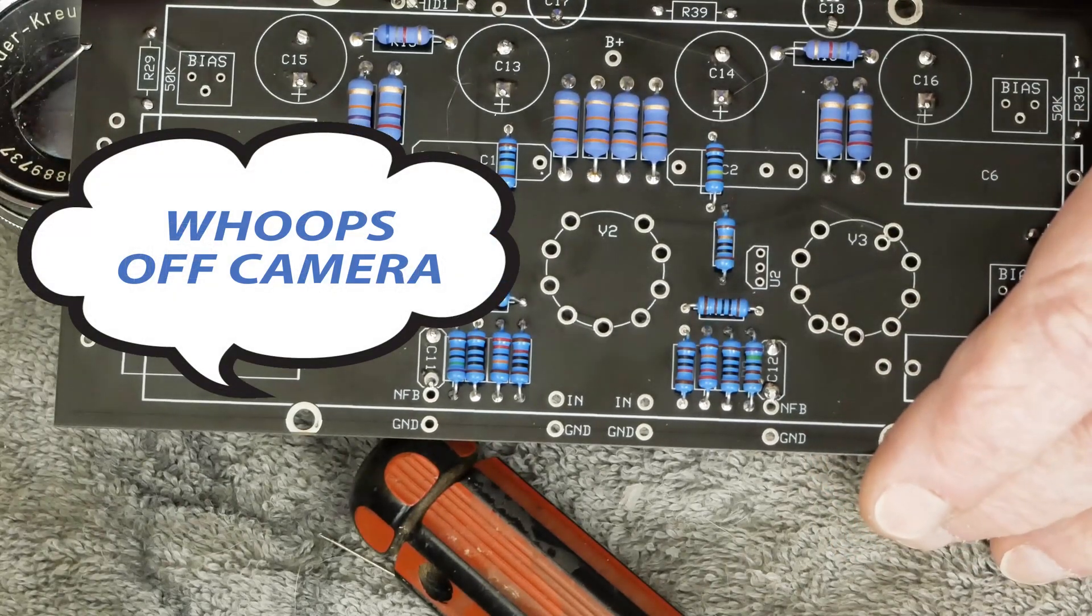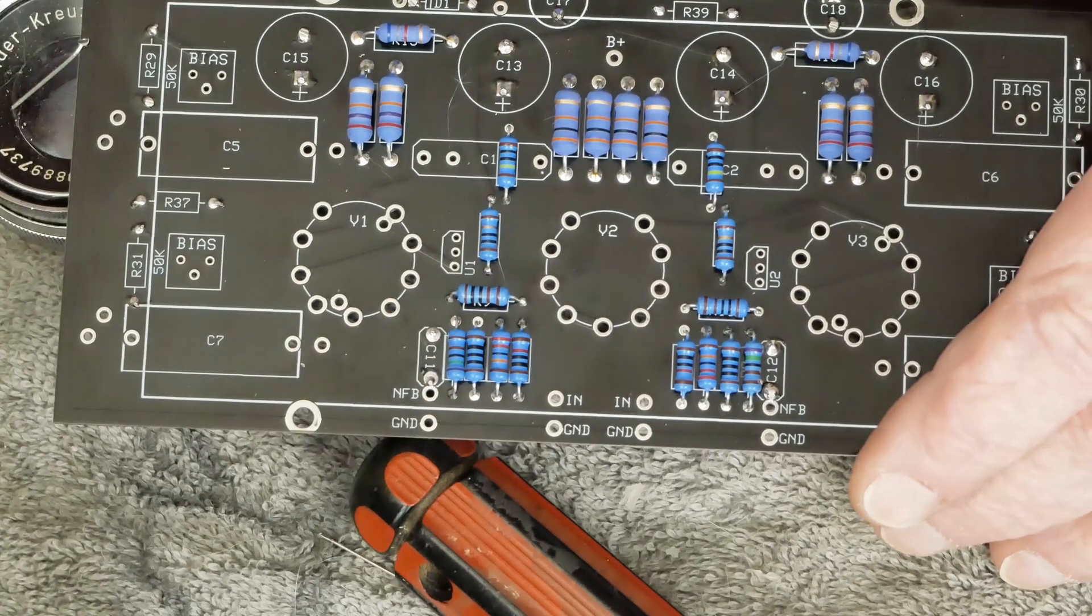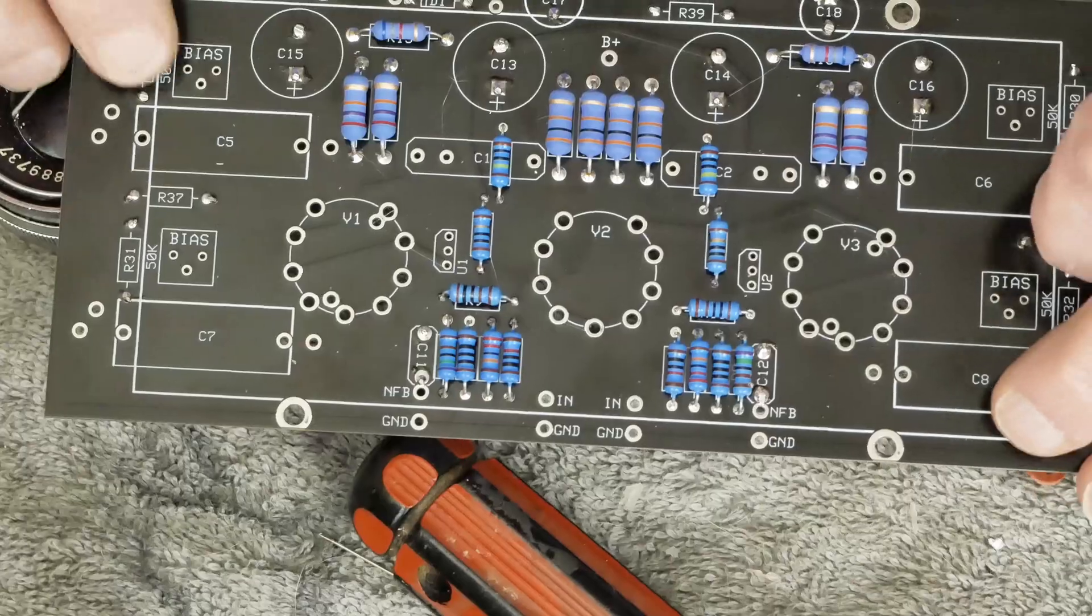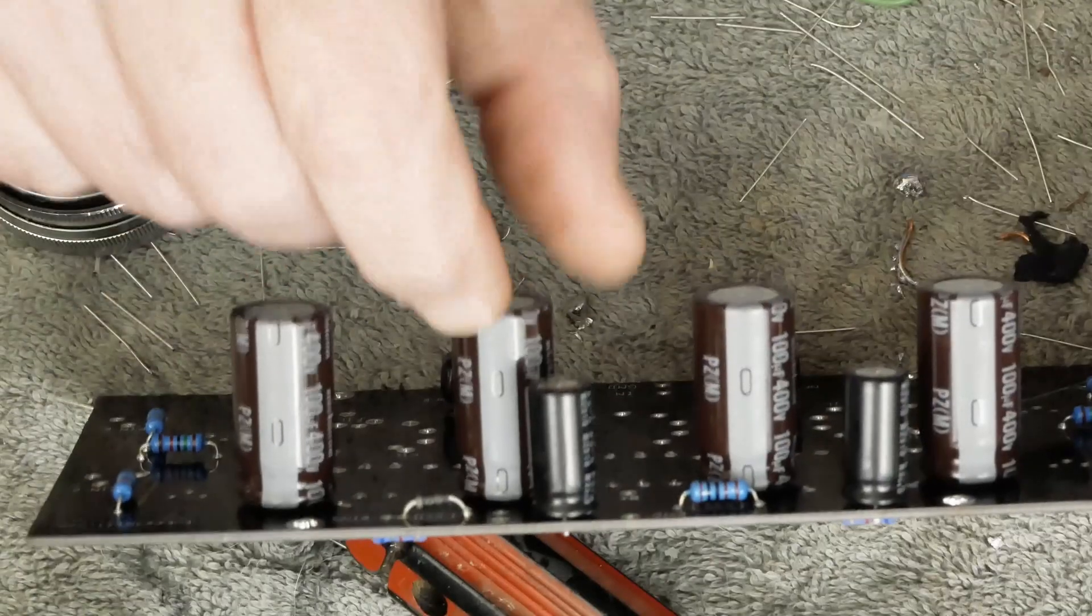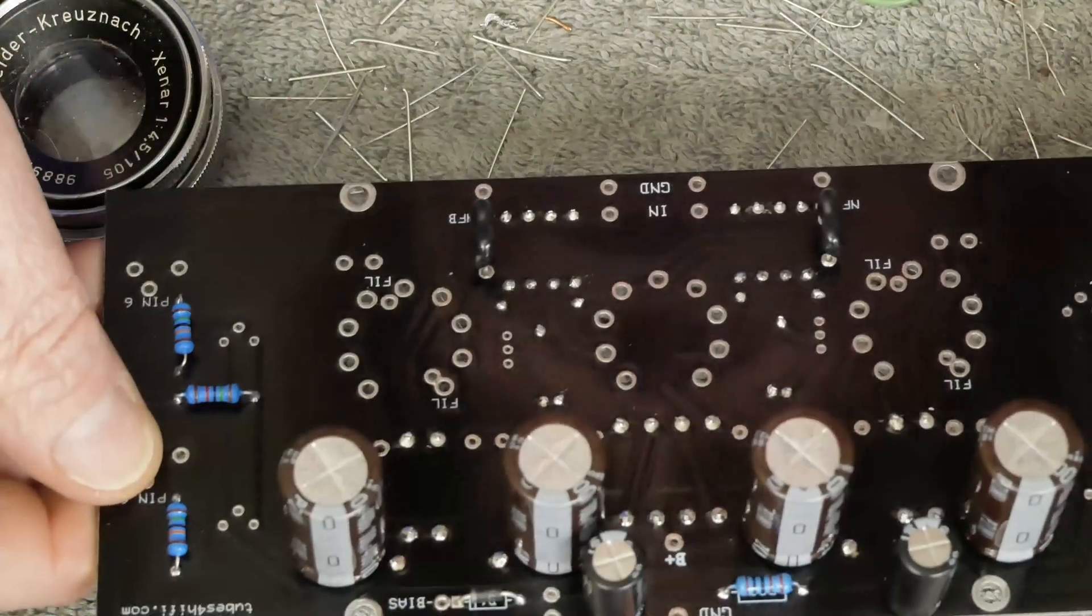And solder that little guy in place. And be a little careful soldering this. It's easy to bleed over into this hole and fill it up, and then you're going to have to deal with getting that hole open back up. So, I made that mistake on the last board I built. Let me make sure the caps are tight against the board, and that's all done.